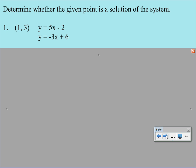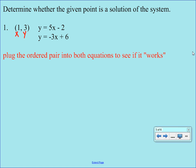And then the point, one, three, we're trying to figure out is that the point where these two lines cross. Or, in other words, does this point or is this point going to satisfy both equations? So what I'd like you to start by doing is labeling your ordered pair x, y. So one is our x coordinate and three is our y coordinate. And then what we're going to do with this is plug the ordered pair into both equations to see if it works.